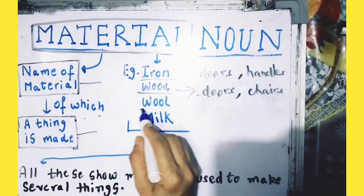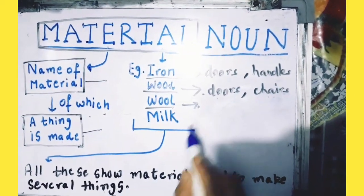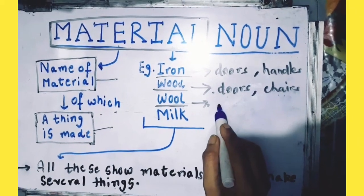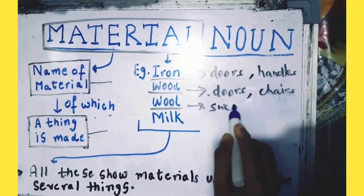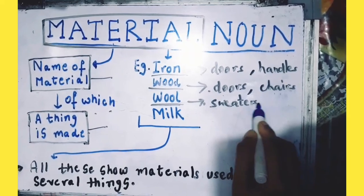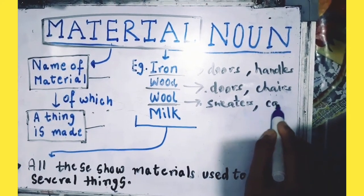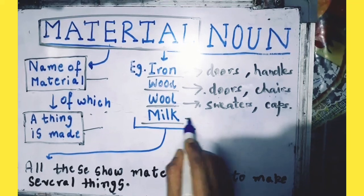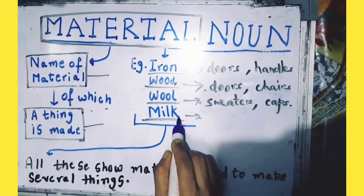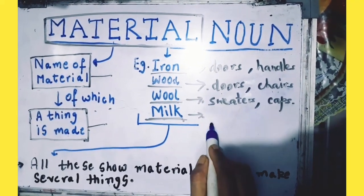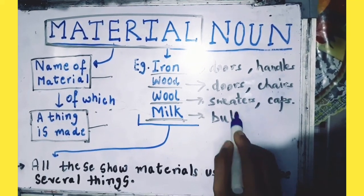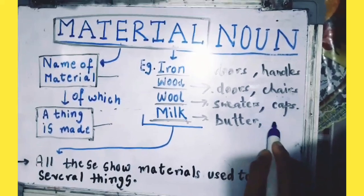Now wool, it is also a kind of material used to make sweaters, caps, and many more things. Next, milk is another substance, material which is used to make butter, cheese, and many more things.